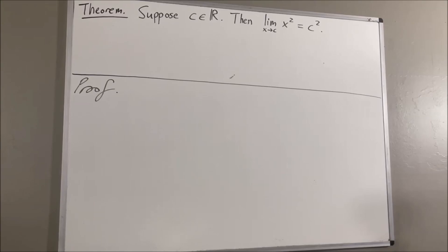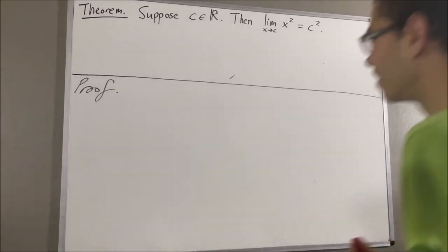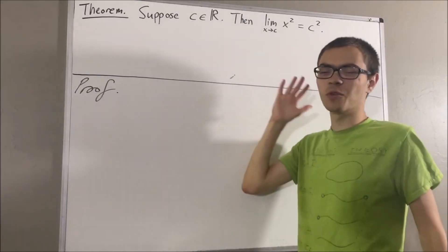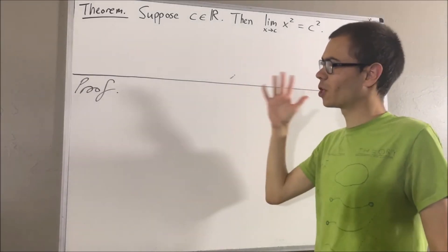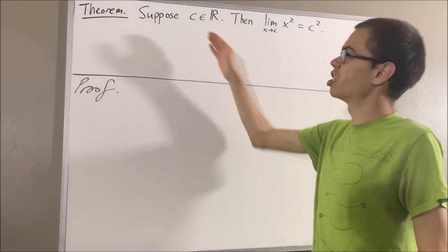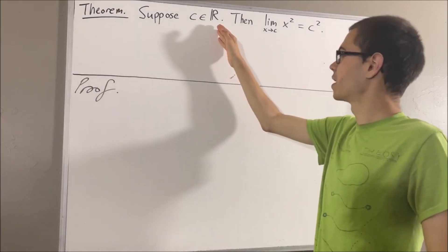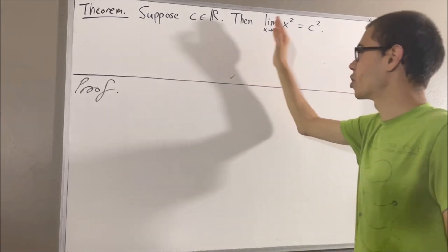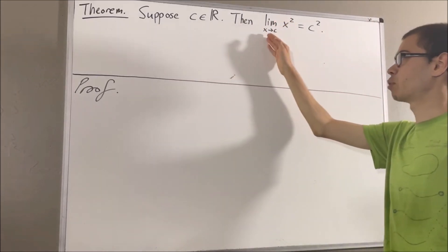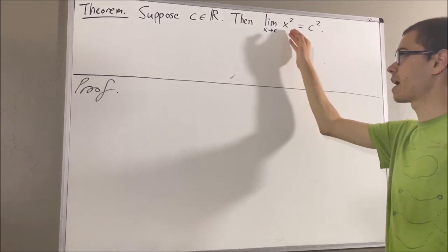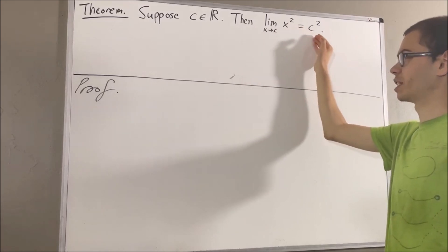In this video, we are going to prove the following theorem. Suppose c is a real number. Then the limit as x approaches c of x squared is equal to c squared.